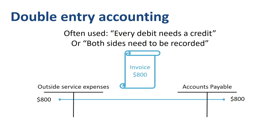An example is shown here: you receive an invoice for $800 worth of outside services. One leg of the entry, the debit, goes to outside service expense. The other leg of the entry, the credit, goes to accounts payable.